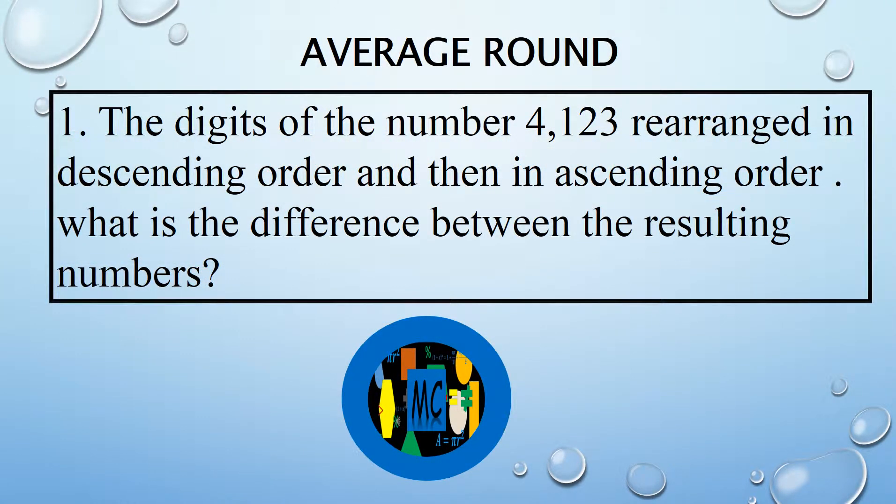The digits of the number 4123 are rearranged in descending order, and then in ascending order. What is the difference between the resulting numbers?